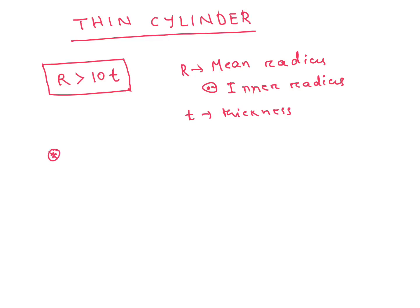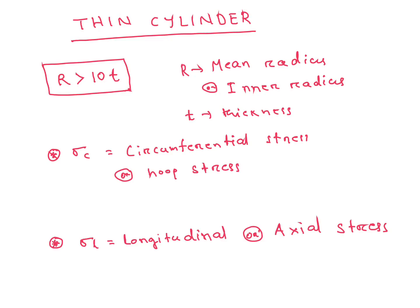Sigma C is circumferential stress, also called hoop stress. Its value is PD by 2T. This has been asked many times in the ISRO examination, and in GATE also 2 to 3 times.